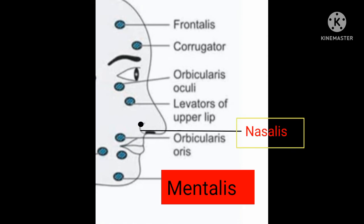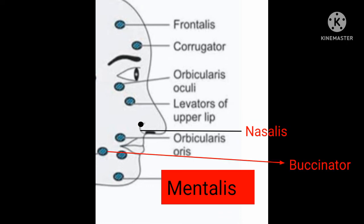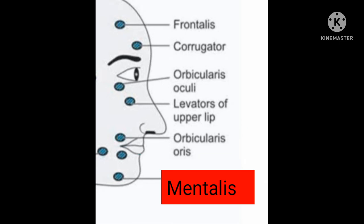This is the motor point for mentalis muscle, and its action is the elevation of the lower lip. This is the motor point for nasalis muscle, responsible for elevation and depression of the nostril. This is the motor point for buccinator muscle, and it holds the cheek against the teeth.